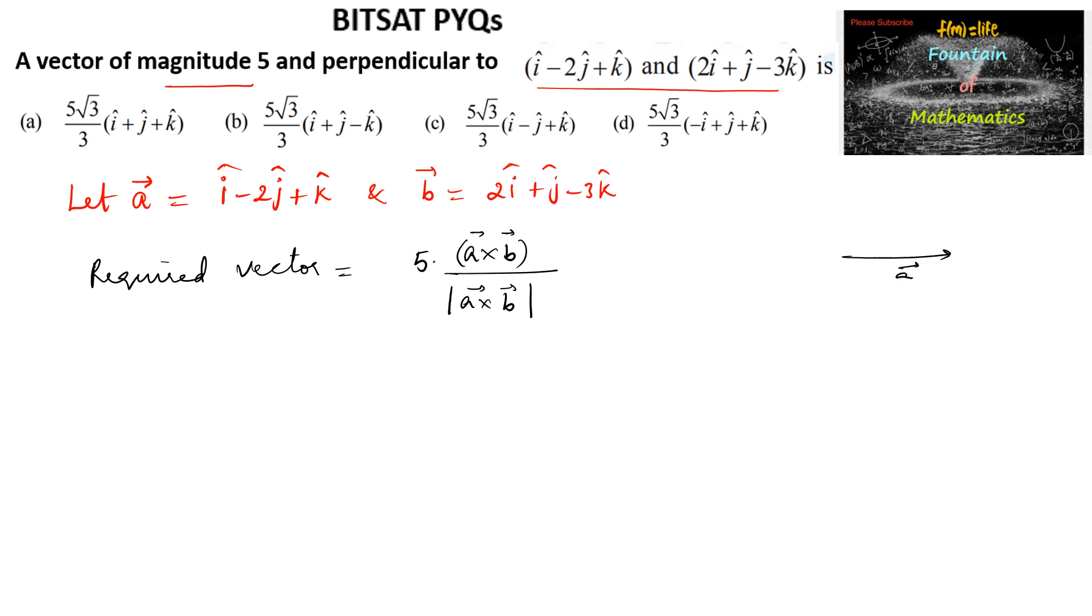Vector a cross b is a vector which is perpendicular to both. Let us find a cross b.